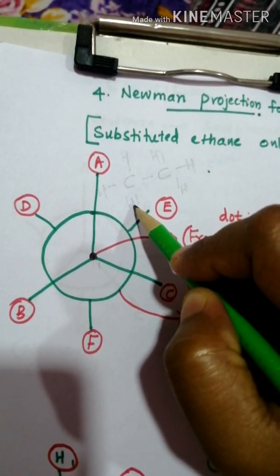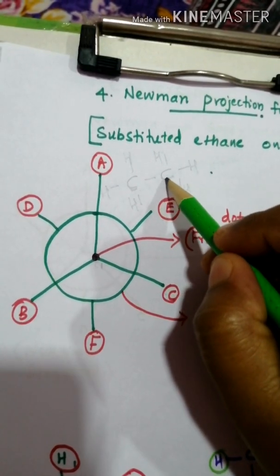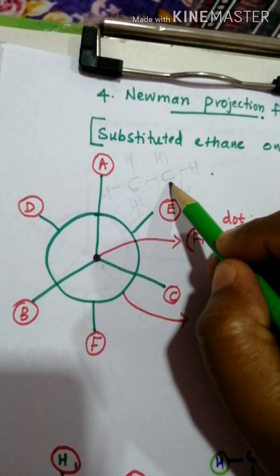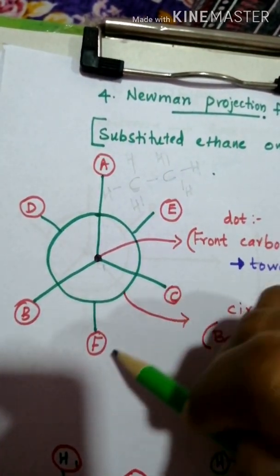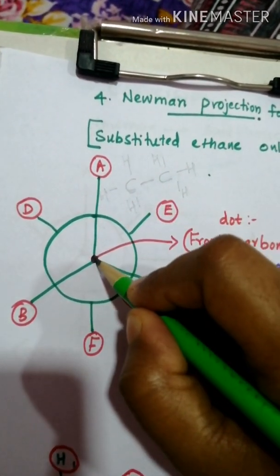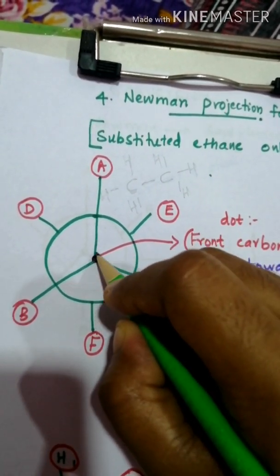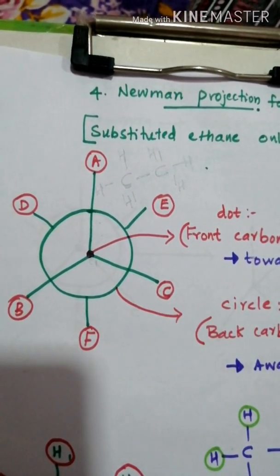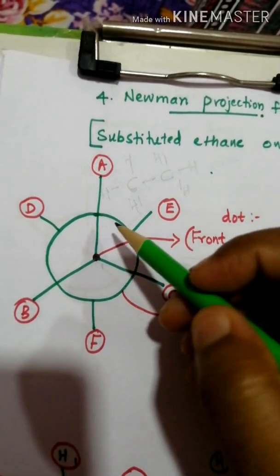Three groups are present on the front carbon. The back carbon, represented by the circle, has groups D, E, and F attached to it. The bond present between C1 and C2 is the C–C bond, which you cannot see directly — it is also the fourth bond of the back carbon, making it an imaginary concept.